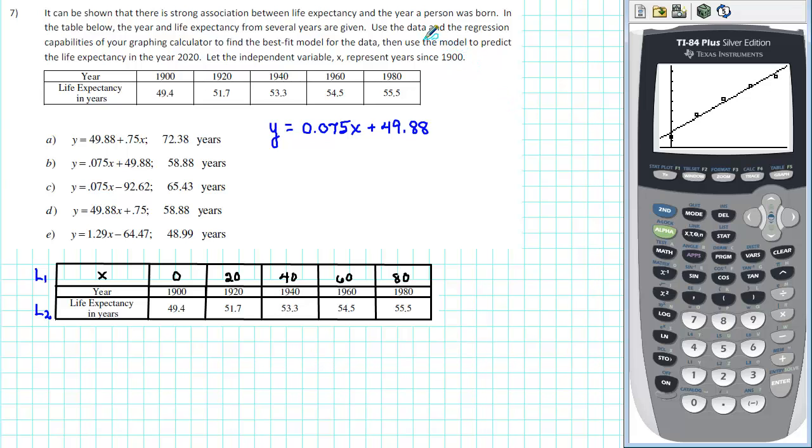For our purposes, we want to use the model to predict the life expectancy in the year 2020. So the first thing we need to do is to determine how many years since 1900 is 2020. The year 2020 is 120 years since 1900.